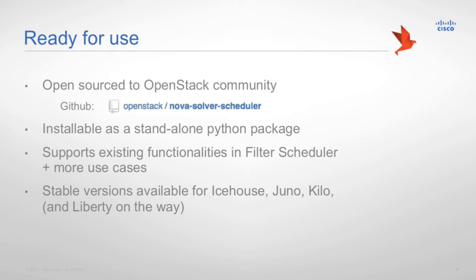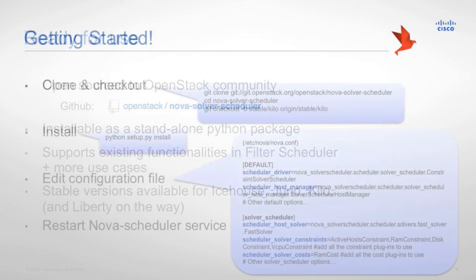How to use it? First, we are open-sourced to OpenStack community. And, currently, our latest code is under the OpenStack namespace. You can just search for OpenStack slash Nova Solver scheduler for that. The scheduler is installable as a standalone Python package, which means that there is no need to change any codes in the existing Nova installation. You can just go on and install it. And, also, we support all the existing functionalities of all the filters that exist in the filter scheduler. And, we can also support a couple of more use cases that the filter scheduler cannot do. And, currently, our stable version is available for Icehouse, Juno, and Kilo. And, the liberty compatibility is also on the way.